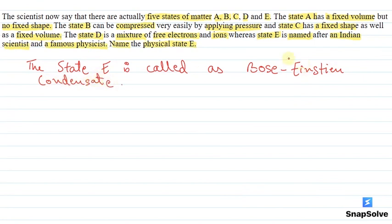So we will write, this was discovered by Satyendranath Bose and some of its discovery which was already done, that was by Albert Einstein. That's why this state was named Bose-Einstein condensate.